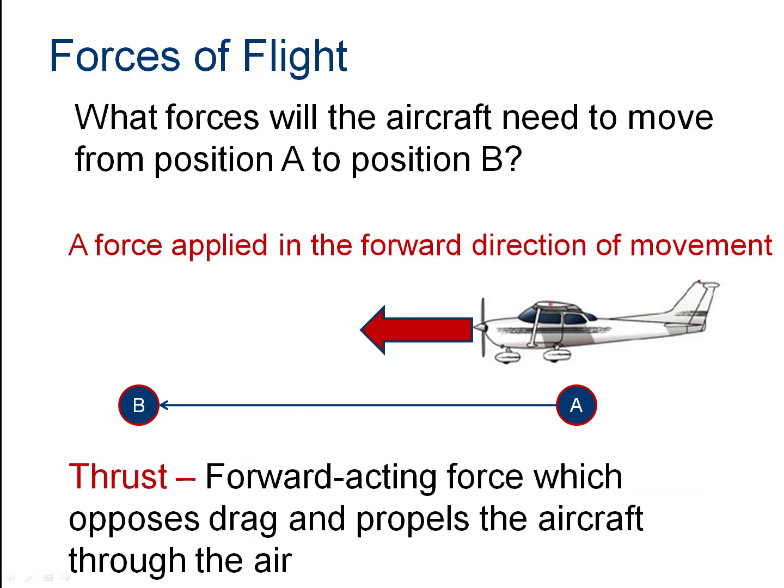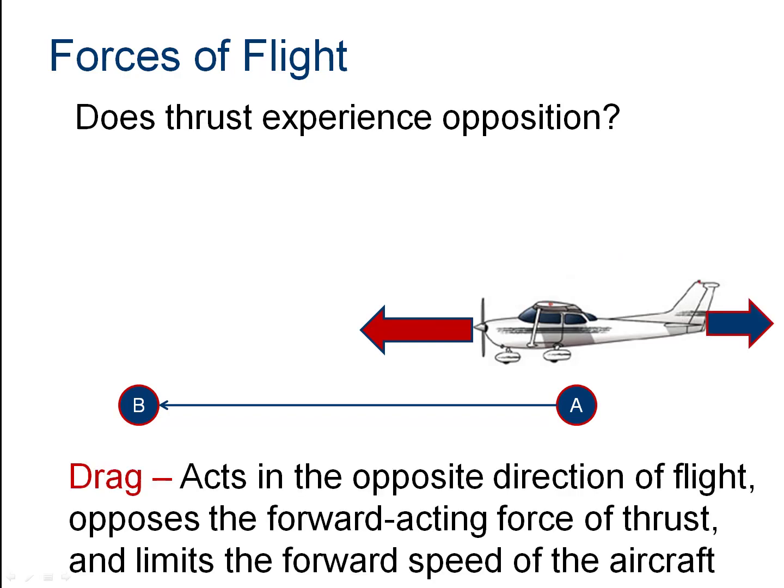If we look at an airplane moving from position A to position B, we need a net force, and thrust is what propels us. As we move, drag resists us — some from the shape of the aircraft (planform drag) and some from the creation of lift (induced drag). The net drag opposes the direction of flight. As we go faster, we get more drag. Ultimately, maximum speed is determined by thrust being neutralized by drag.